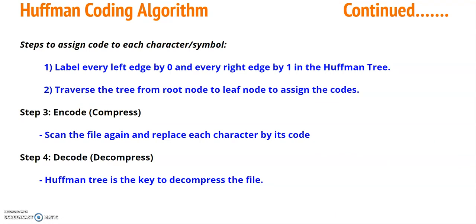After getting the Huffman tree, the next step is to generate the code for each and every symbol in the string. To assign code to each character, we first label every left edge of the Huffman tree by 0 and every right edge by 1. Then we traverse the tree from root node to leaf node to assign the code for each symbol.